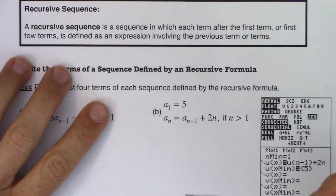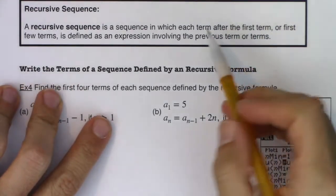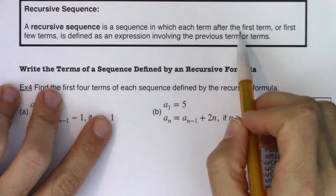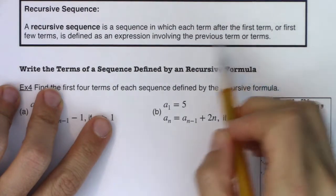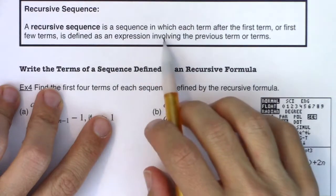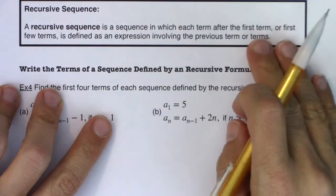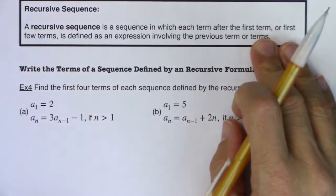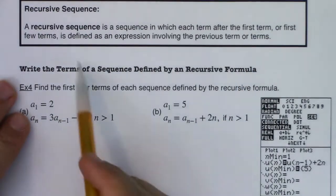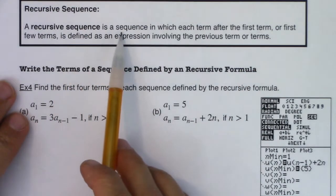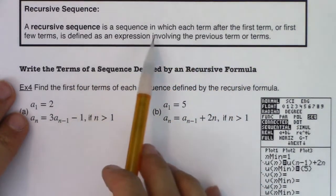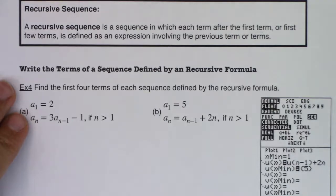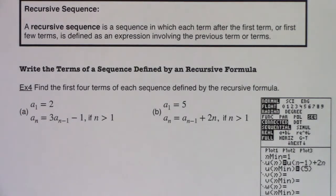For this starter example, example 4, we're going to use a sequence defined in terms of the first term, where each term after that is an expression involving the previous term. We'll ignore the plural version until example 5. So recursive sequences here are sequences in which each term after the first is defined as an expression involving the previous term.